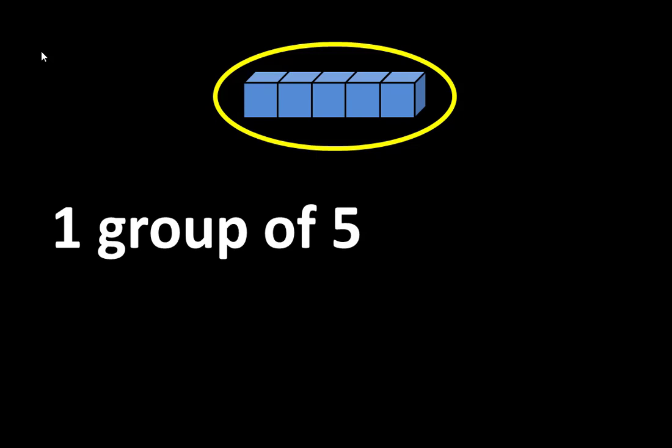Here is a group of five. There is one group of five. According to the Identity Property of Multiplication, one group of five is equal to five, or one times five is equal to five.